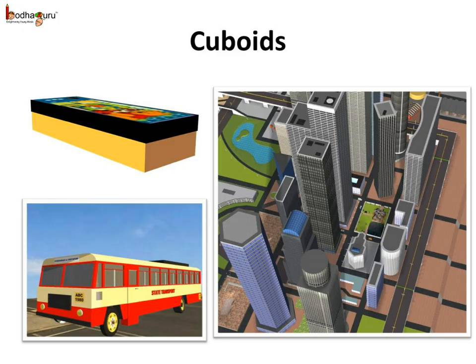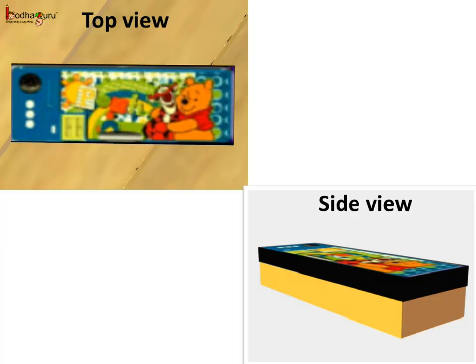Now, we need to draw cuboids. If we want to draw bus or pencil box or building and many other things. How to do it? If we look at the pencil box, it looks like rectangle from the top view and the bottom view. And all its other faces are rectangle too.